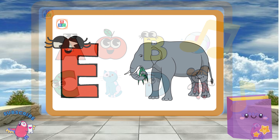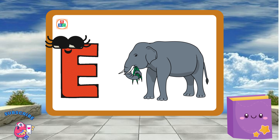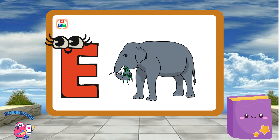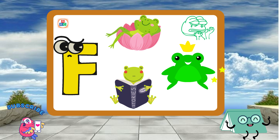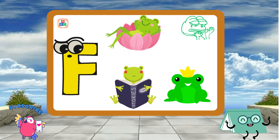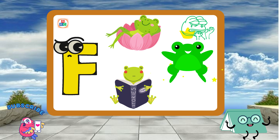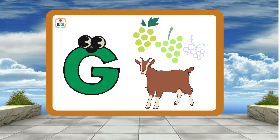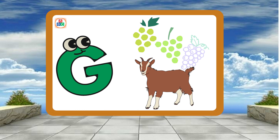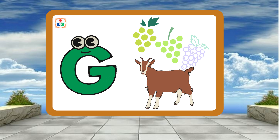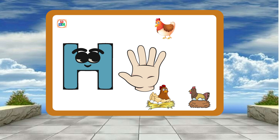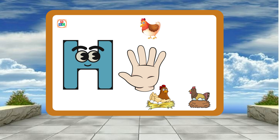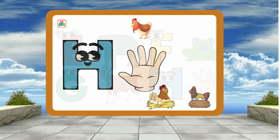E is for Elephant. E-E-Elephant. F is for Frog. F-F-Frog. G is for Goat. G-G-Goat. H is for Hand. H-H-H-Hand.